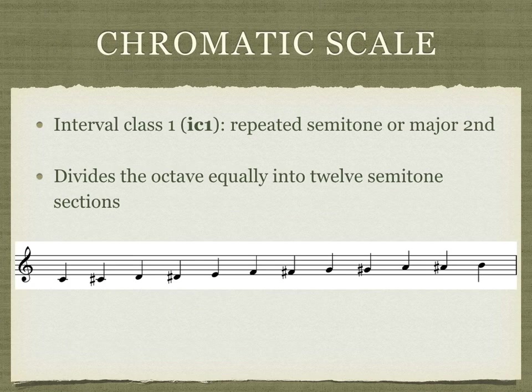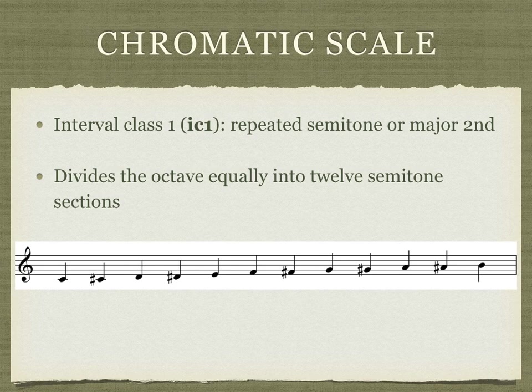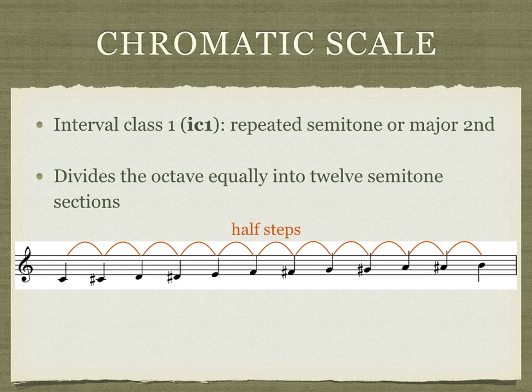So let's see how each cycle plays out in a scale. The first interval class cycle is interval class 1, or repeated semitone. This scale is the one that you know and love to practice: the chromatic scale, which is made up of only half steps. Chromatic scales are not often used in tonal music, as all 12 pitches are present and it makes it somewhat difficult to center around a single tonic, but it is a symmetrical scale nonetheless.